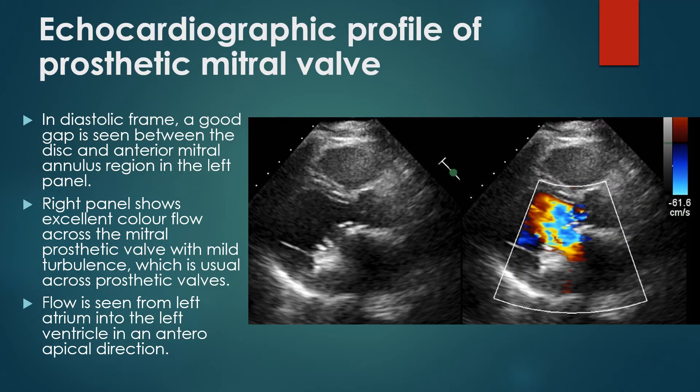A good gap is seen between the disc and the anterior mitral annulus region in the left panel. The right panel shows excellent colour flow across the prosthetic mitral valve with mild turbulence, which is usual across a prosthetic valve. Flow is seen from the left atrium to the left ventricle in an anteroapical direction.